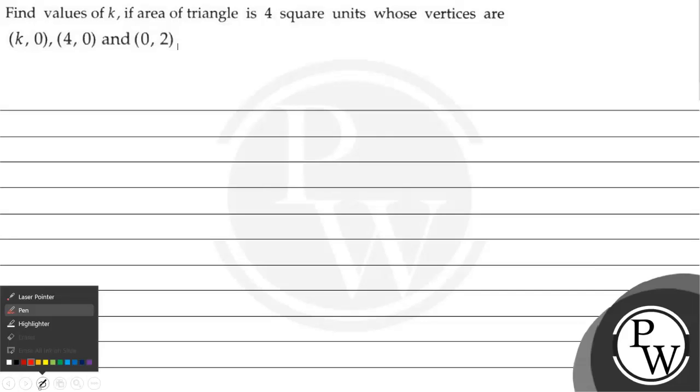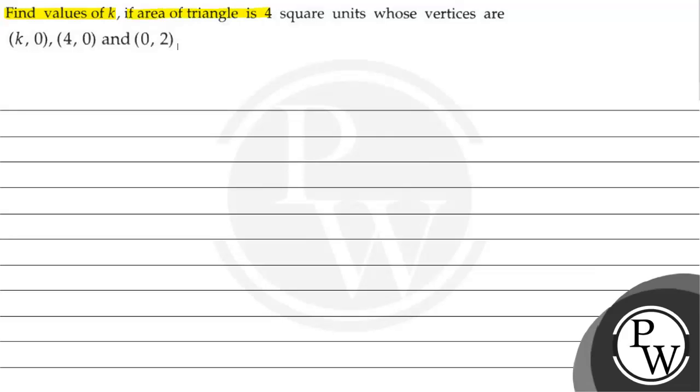Hello, let us read the question. The question says, find values of k if area of the triangle is 4 square units whose vertices are k, 0, 4, 0 and 0, 2.